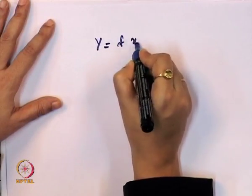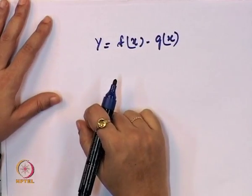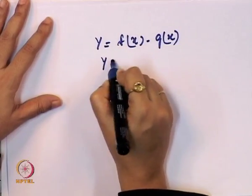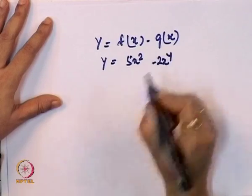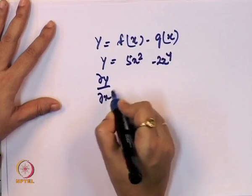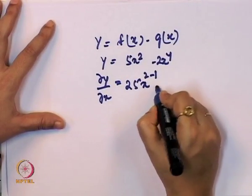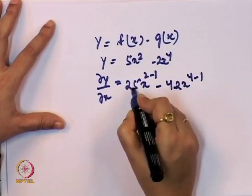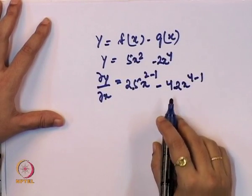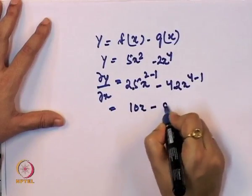Now, what happens when it is not addition but subtraction — when y is dependent on x through a functional form with a difference? Taking y = 5x² - 2x⁴, the first order derivative is dy/dx = 2·5·x^(2-1) - 4·2·x^(4-1) = 10x - 8x³.